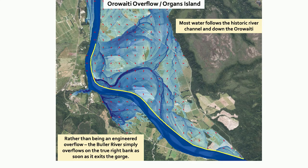Now I'll talk about the main flood mechanisms for Westport. The first mechanism is the Organs Island or the Orawaiti overflow. I've gone through this in a little bit of detail already, but I want to highlight that the Orawaiti overflow is simply the true road bank of the Orawaiti as the river exits the gorge.